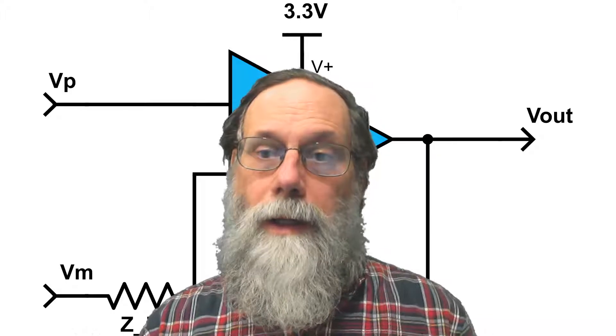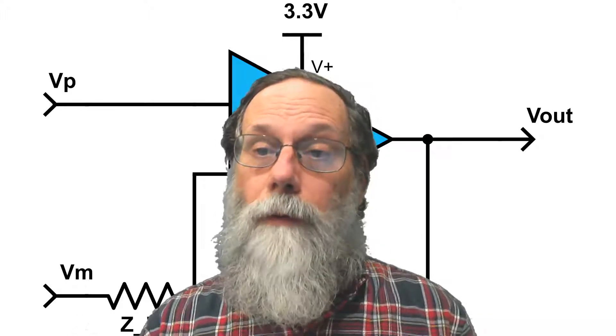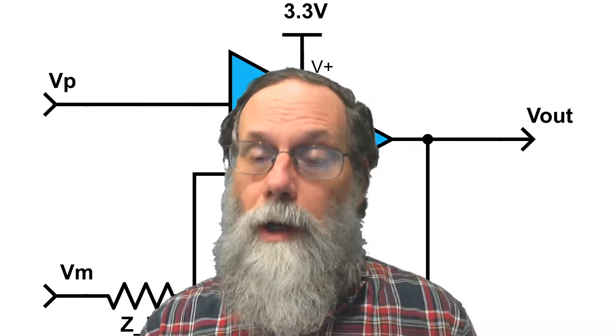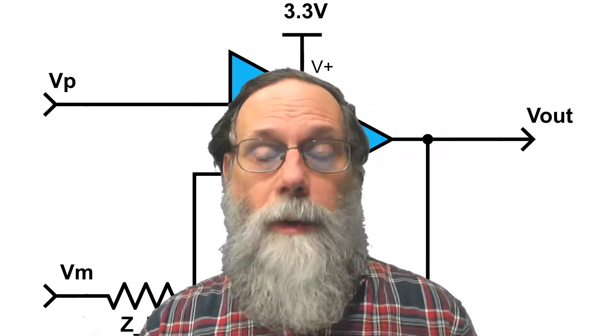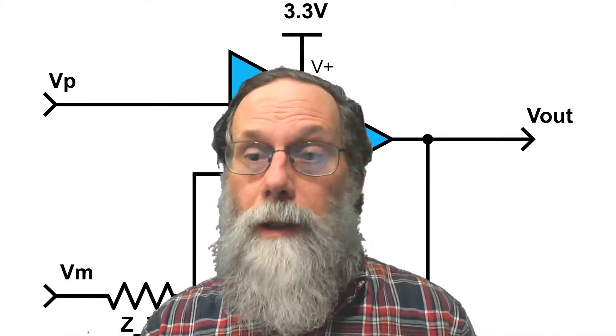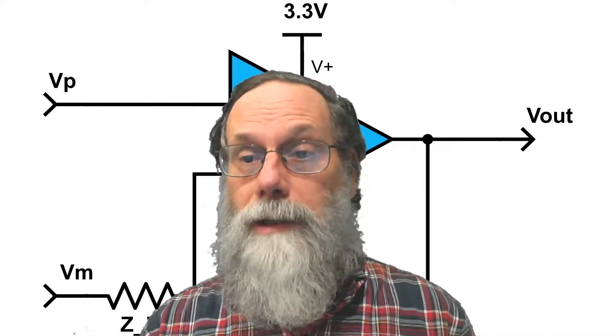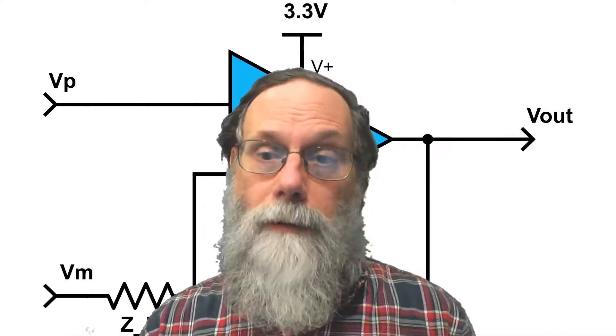This video is a demonstration of using a Schmidt trigger to clean up a noisy analog signal. It corresponds to section 17.4.3 of the Applied Analog Electronics textbook and is part of lab four.